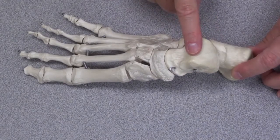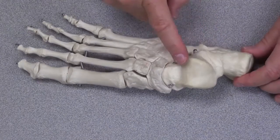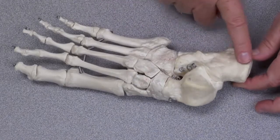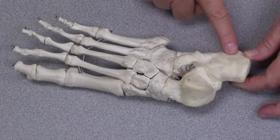So let's take a look at the tarsal bones. The talus is obviously a major tarsal bone. The heel bone, that's this, is the calcaneus.